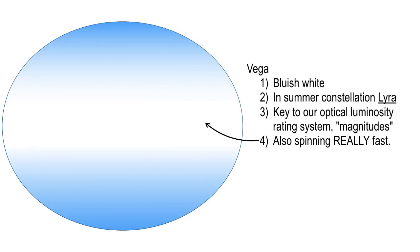If it spins a little bit faster, it'll break apart. The rings of Saturn are from, we think, a moon that got so close that the tidal deformation stretched it out longitudinally — like spaghetti. If it stretched out the moon a little bit more — bang, it breaks apart. Similarly, if something is spinning and deformed like this, a little bit faster — bang, it'll break apart. It won't hold together.